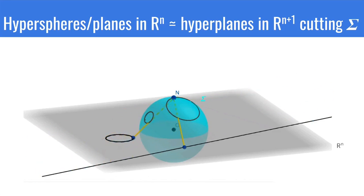This means that conformal maps of R^n are gonna come from maps of R^{n+1} that preserve hyperplanes cutting sigma.